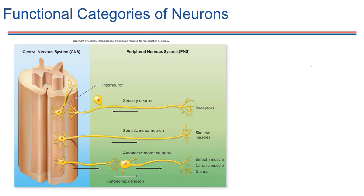All neurons have those three things in common — a cell body, dendrites, and one axon — but there are different categories of neurons in terms of what they do and what they signal. Within the central nervous system, there can be axons that are entirely contained. For example, this one shown here is called an interneuron.